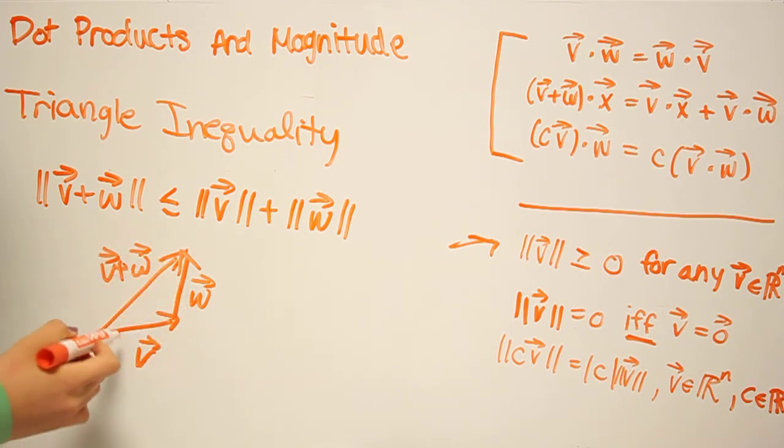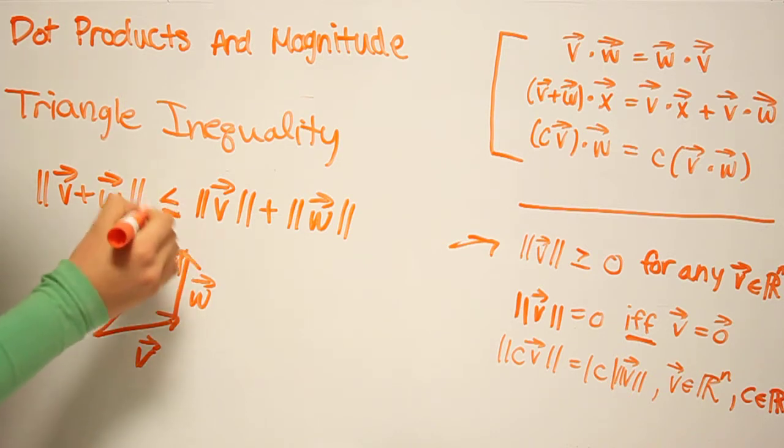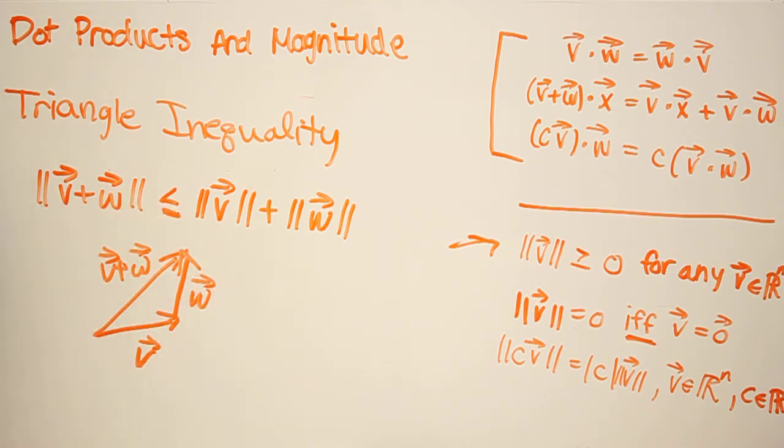Two sides of a triangle can never be greater. The sum of the two sides of this triangle are always greater than the third side. So we would have something like where it would reach equality if we have one of these vectors as the zero vector.